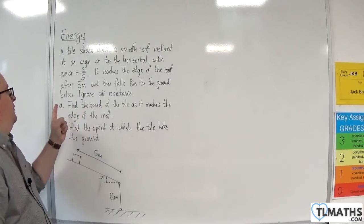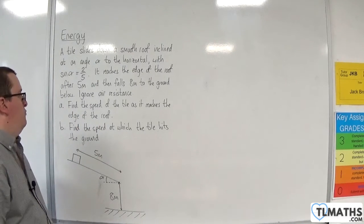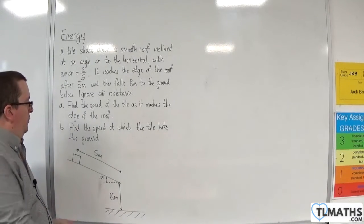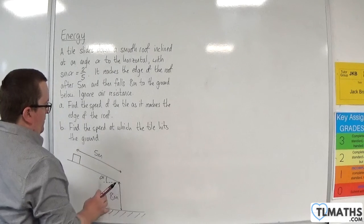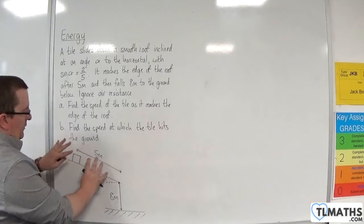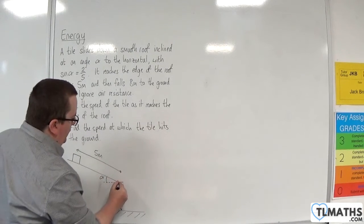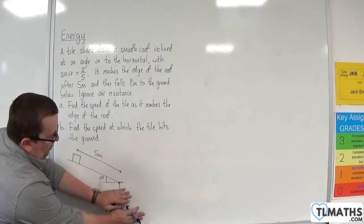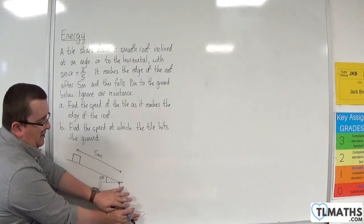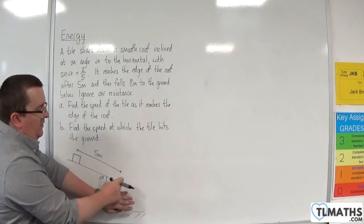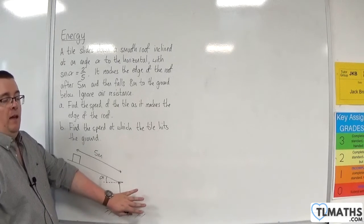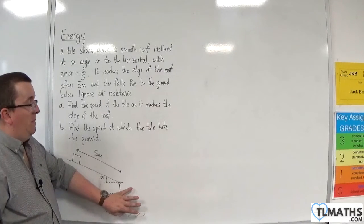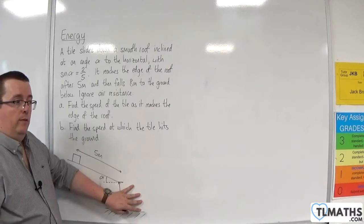Now, the question asks us to find the speed of the tile as it reaches the edge of the roof. So we're just going to consider this section now. And just because I'm considering that section, I am going to consider this point as ground zero. So completely ignore the fact that we are eight metres above the ground. I'm just going to take that point as zero, that height as zero, because that will just make my calculations easier to work with.